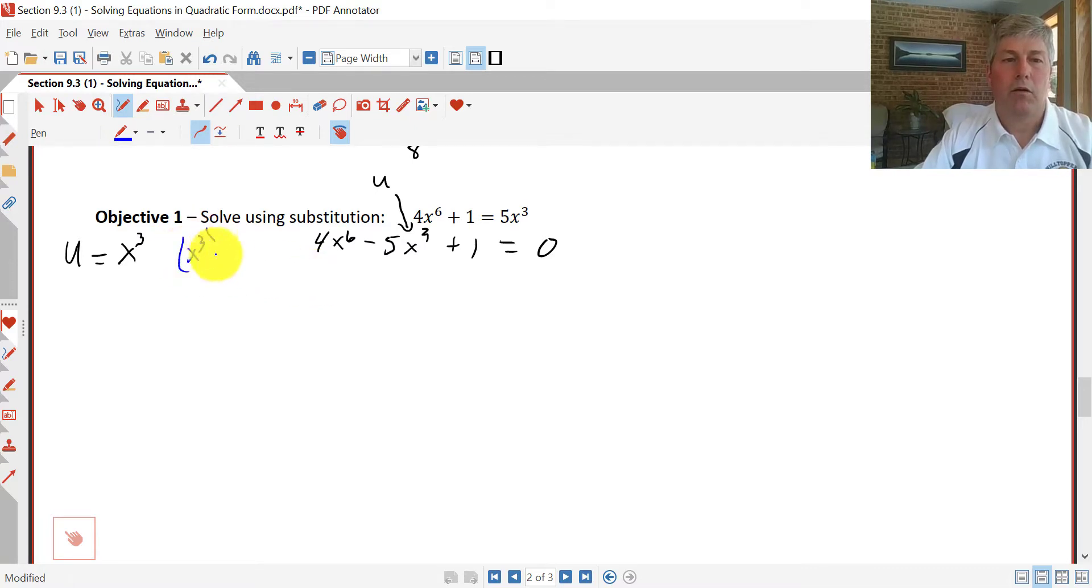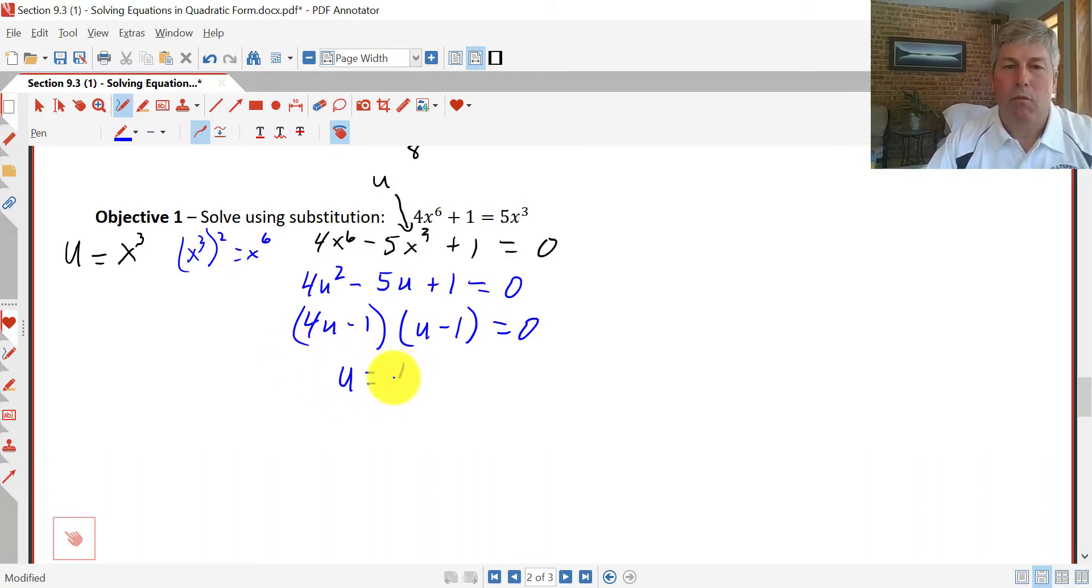So we can just make this 4u² - 5u + 1 = 0. And that one's relatively easy to factor. (4u - 1)(u - 1). We've actually done that one before. I think that was an earlier problem, so I'm just going to copy that and not do the factor by grouping. And we get u = 1/4 and u = 1.